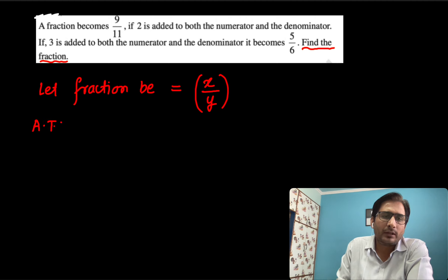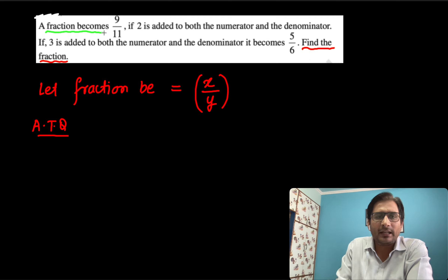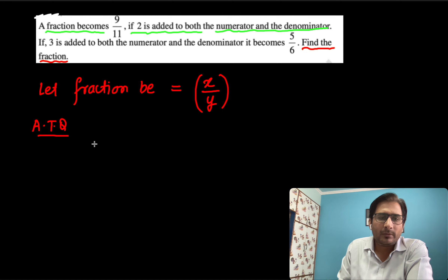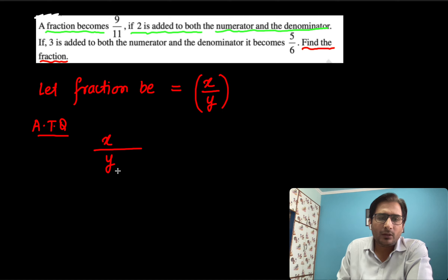According to the question, a fraction becomes 9 by 11 if 2 is added to both the numerator and denominator. So if I add 2 to the numerator x and 2 to the denominator y, the fraction will become 9 by 11.